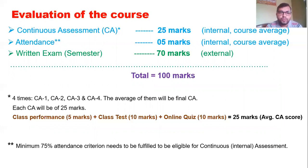Now, each CA, there will be a total of 4 CAs, 4 internal assessments or continuous assessments. Each CA will be of 25 marks, and the average of these 4 CAs will be taken as the final CA marks. 75% attendance is the minimum criterion that needs to be fulfilled to be eligible for the continuous assessment. Now, in the CA, this 25 marks, if we divide, 5 marks is from the class performance of the students, the interactive class sessions, question and answer sessions in each week or each class.